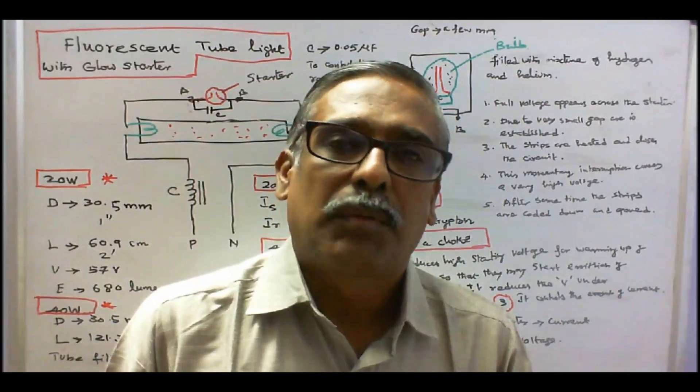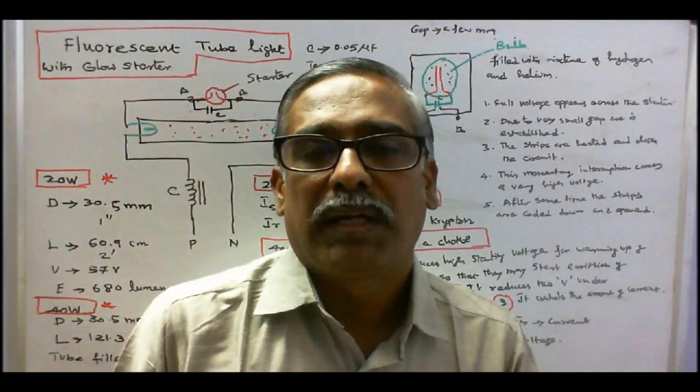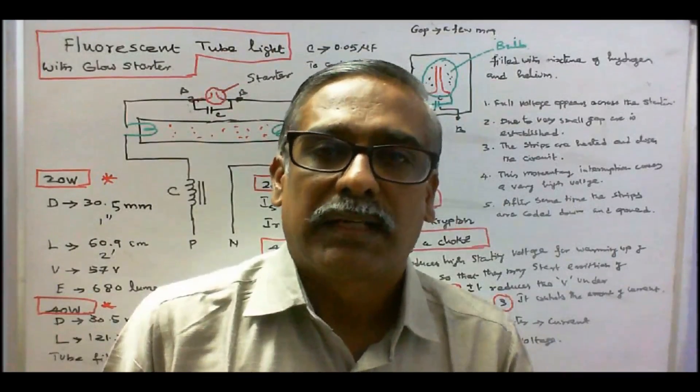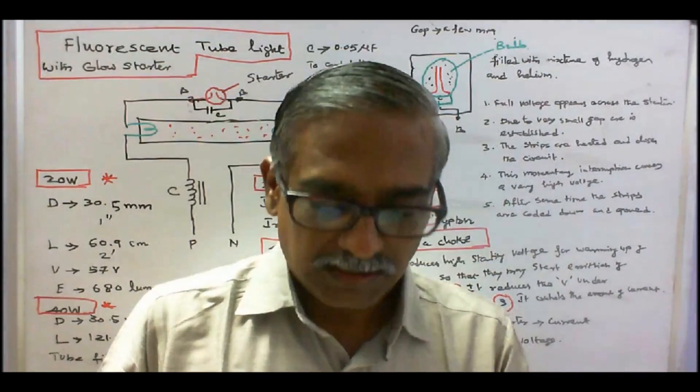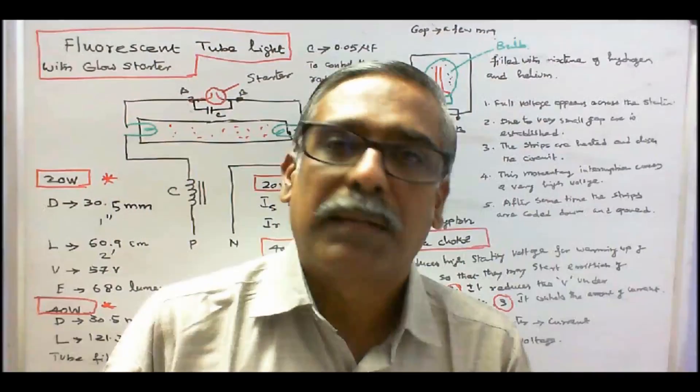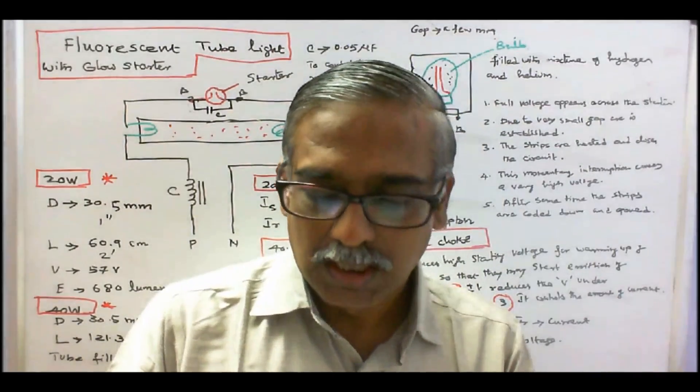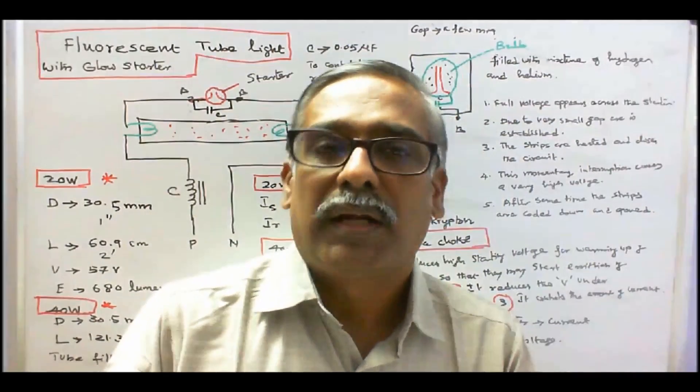This class we discuss about the operation of fluorescent tube light with the glow starter. A fluorescent tube light is a discharge lamp. The discharge lamps are two types. One is lamps which are coated with fluorescent material discharge ultraviolet radiation.